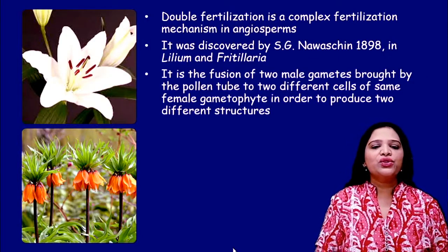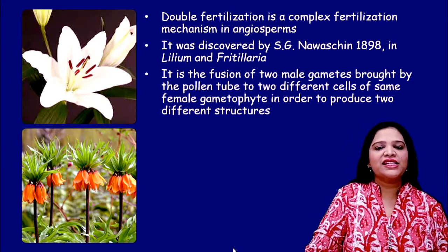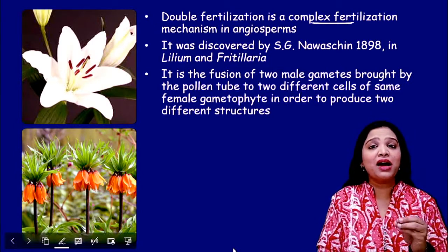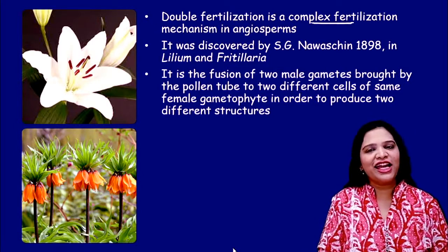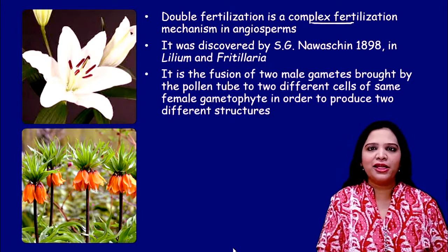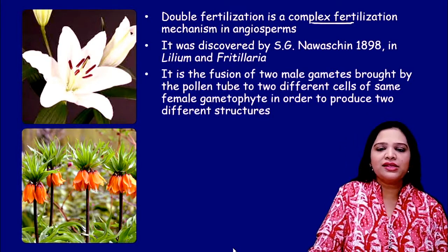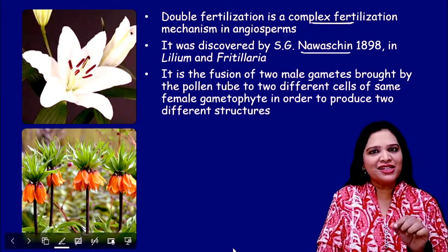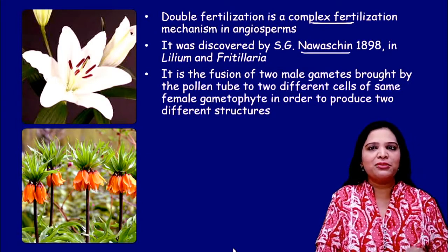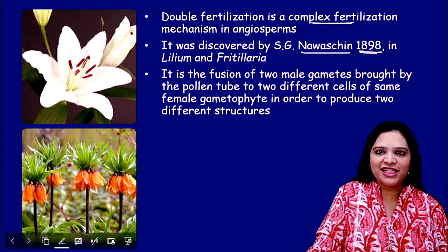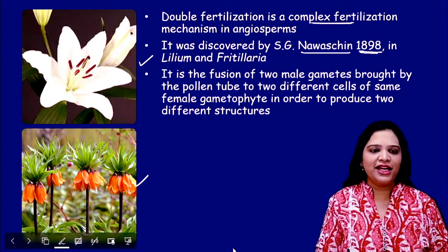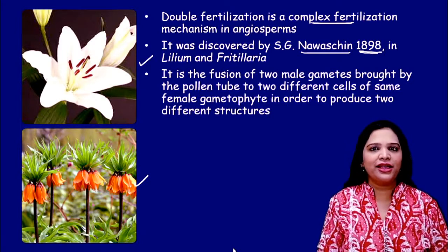Double fertilization is a very complex type of fertilization and this mechanism occurs particularly in the angiosperms — only in the flowering plants. This was first discovered in 1898 by Navashin. Navashin discovered this double fertilization method occurring in the angiosperms, particularly in flowers like Lilium and Fritillaria.